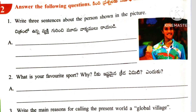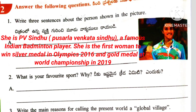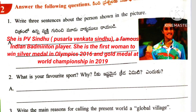Roman number 2. Answer the following questions. Question number 1: Write three sentences about the person shown in the picture. Answer: She is PV Sindhu — Pusarla Venkata Sindhu — a famous Indian badminton player. She is the first woman to win a silver medal at the Olympics 2016 and a gold medal at the World Championship in 2019.